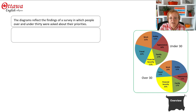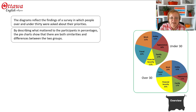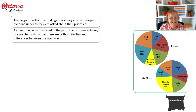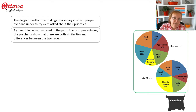Following that, you're going to have your overview — and we don't want any details. So we might say: by describing what mattered to the participants in percentages, the pie charts show that there are both similarities and differences between the two groups. Because across the room, that's all you can see — you can see that the red is a little bit smaller in the second circle and that the blue is a little bit bigger in the upper circle.